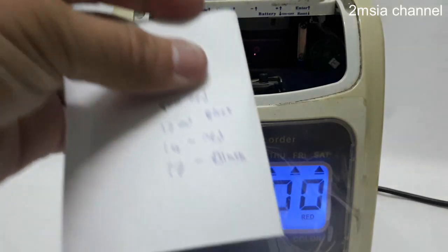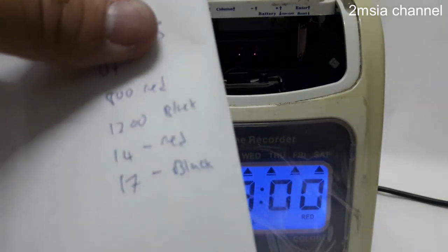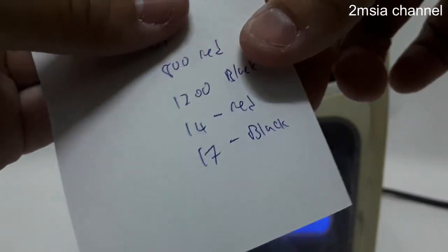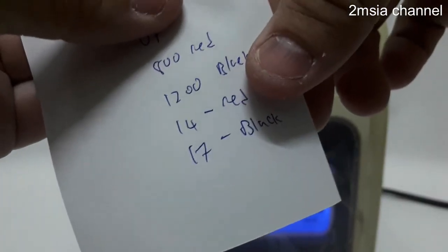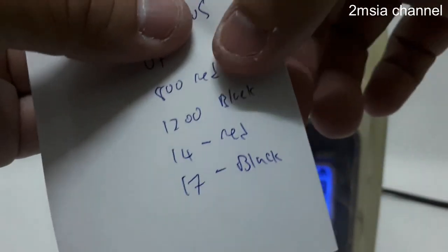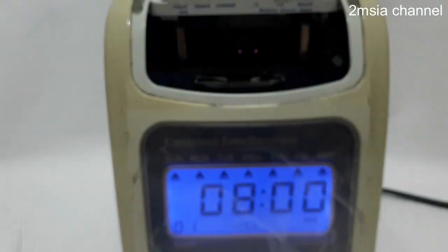Program number one, I will write down over here. For example, you want to set the timeline. During that period, 8 a.m. is red, 12 p.m. is black, 2 p.m. is red, and 5 p.m. is black.